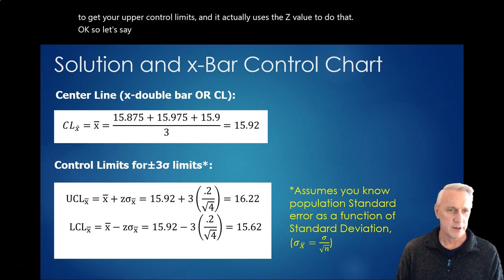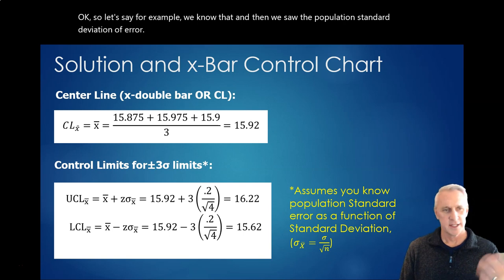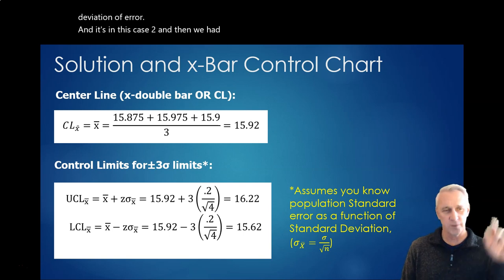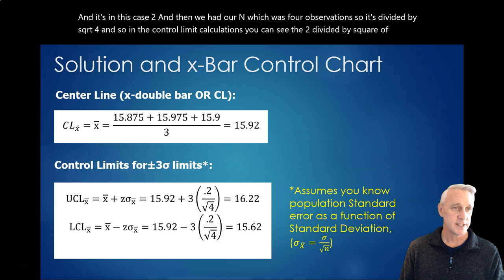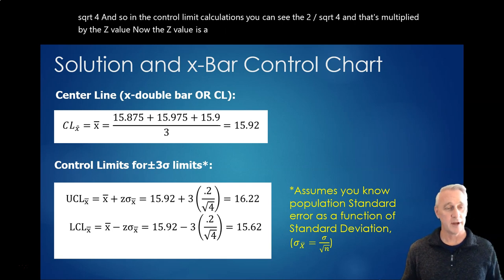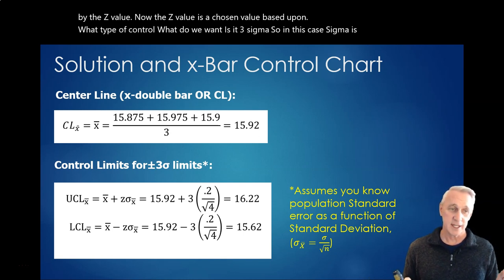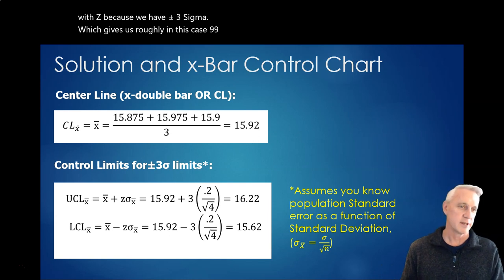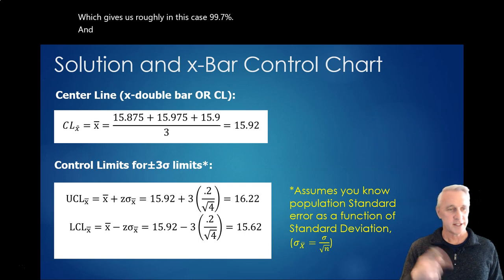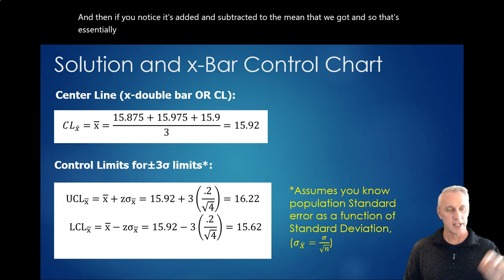So, let's say, for example, we know the population standard deviation of error, and it's, in this case, 0.2, and then we had our n, which was four observations, so it's divided by square root of four. And so, in the control limit calculations, you can see the 0.2 divided by square root of four, and that's multiplied by the z value. Now, the z value is a chosen value based upon what type of control limit do we want. Is it three sigma? So, in this case, sigma is synonymous with z, because we have plus or minus three sigma, which gives us roughly, in this case, 99.7% confidence. And then, if you notice, it's added and subtracted to the mean that we got. And so, that's essentially how we calculate that upper and lower control limit. Once we have these three lines, because that's what they are, they're plotted as lines, we can then plot our data against these lines.